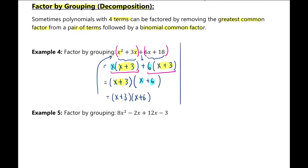Let's try method two to prove this is correct. We can rewrite the expression and simplify by combining like terms. I see x and x with the same exponent, so we can add the coefficients. This gives us x squared plus 9x plus 18.